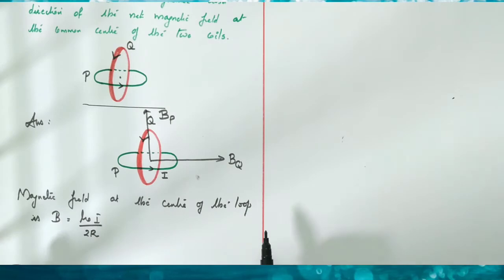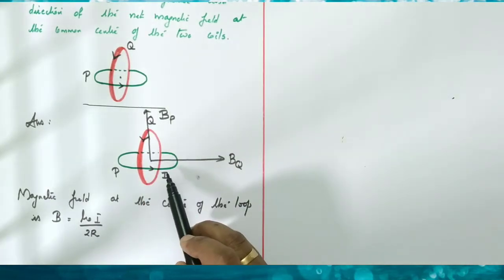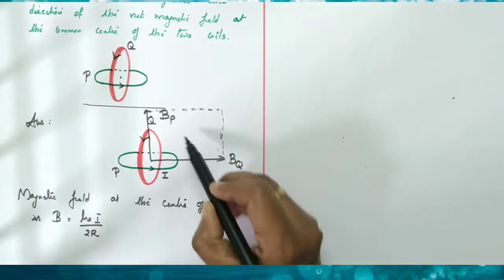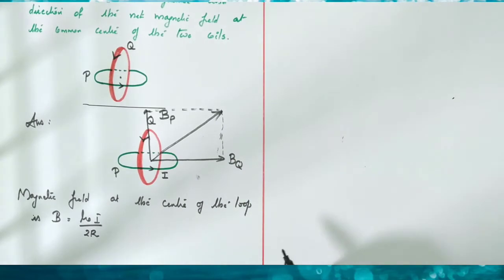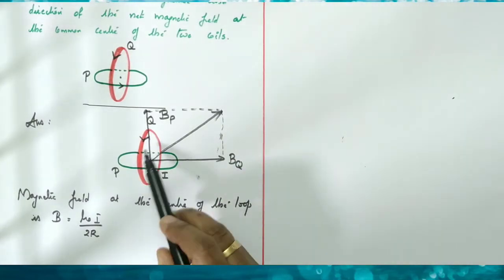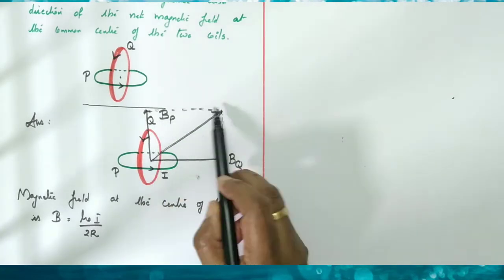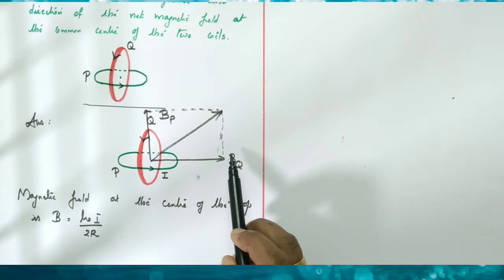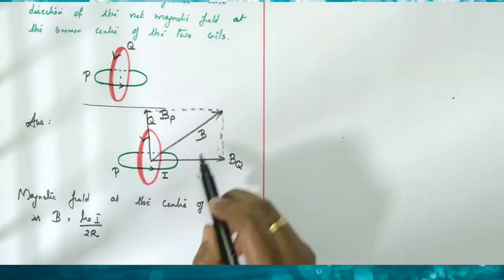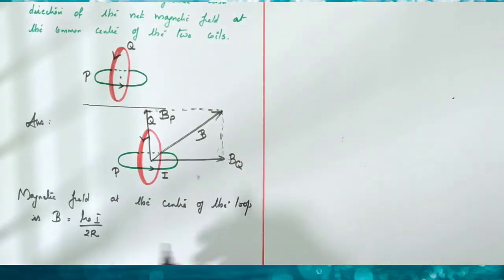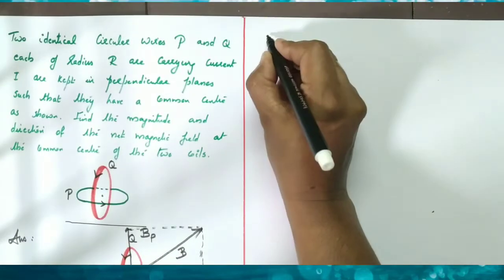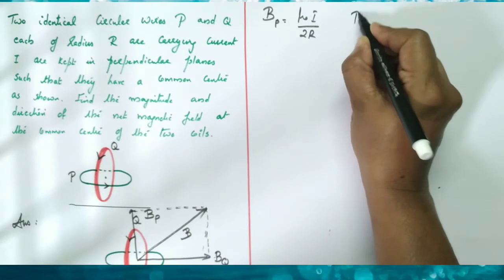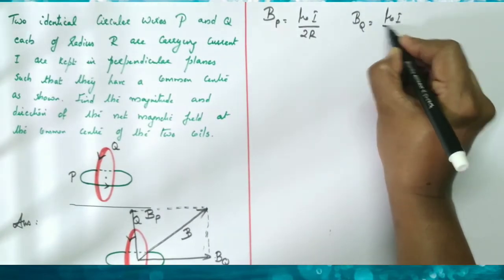We use the parallelogram law of vector addition to find the net magnetic field. The magnetic field due to the first loop BP equals mu-0 I divided by 2R, and the magnetic field due to the second loop BQ equals mu-0 I divided by 2R. The two vectors BP and BQ are perpendicular to each other, with an angle of 90 degrees between them.